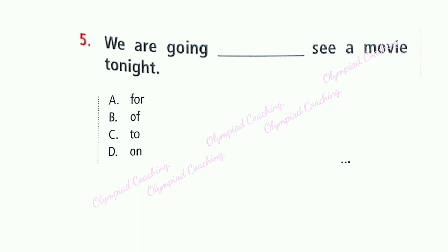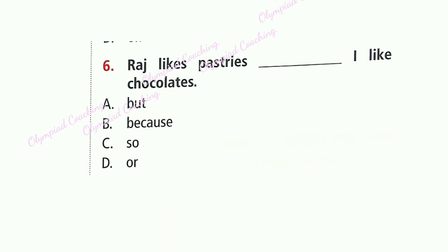Question 5: We are going dash see a movie tonight. Option C is correct: To see. We use 'to' plus root verb to express purpose — for example, 'to eat,' 'to go.' In English grammar, these are called infinitives or verbal nouns.